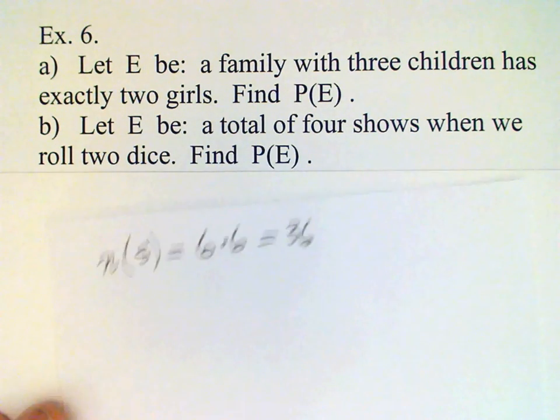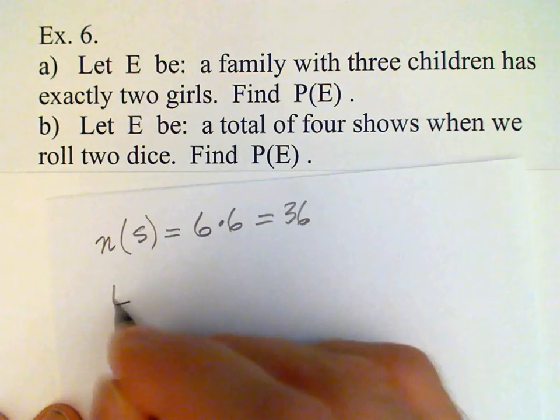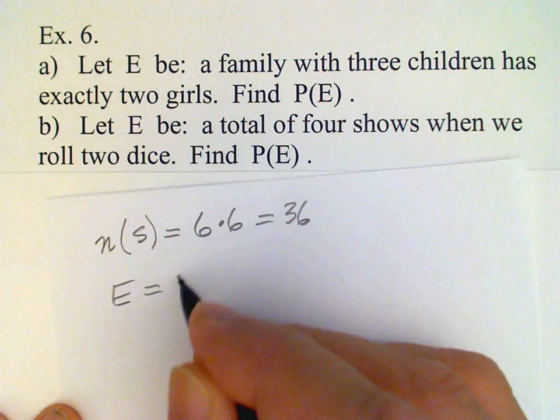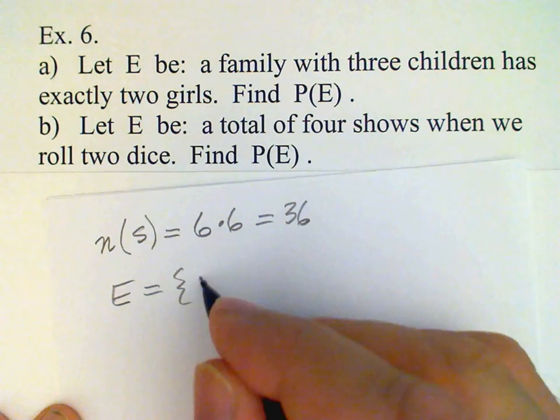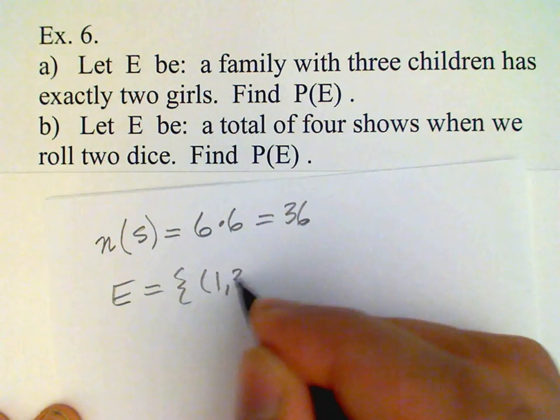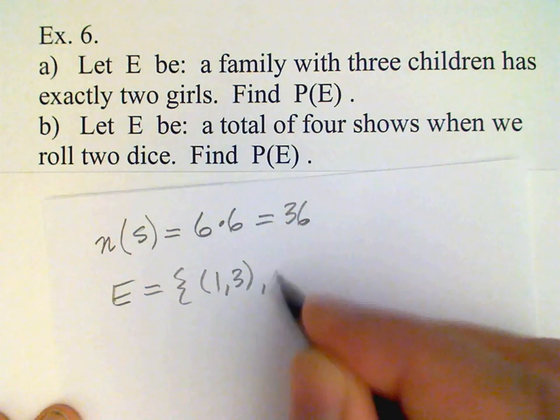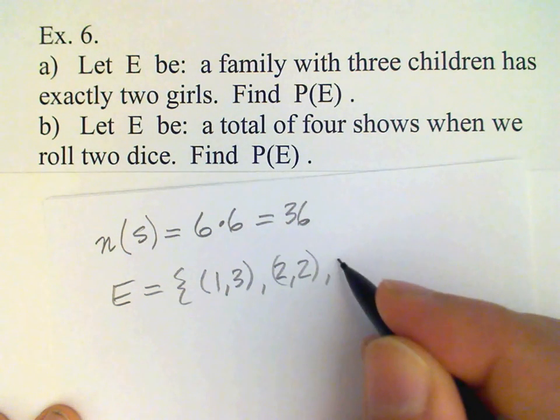Now, how about this event? Okay, well, there are actually three different ways that we can get a four. We could have one, three; or we could have two, two; or we could have three, one.